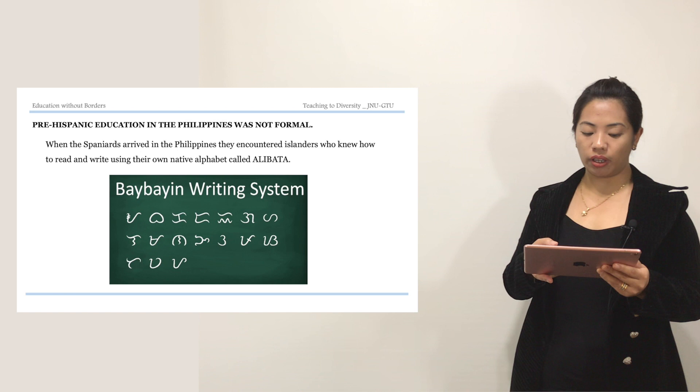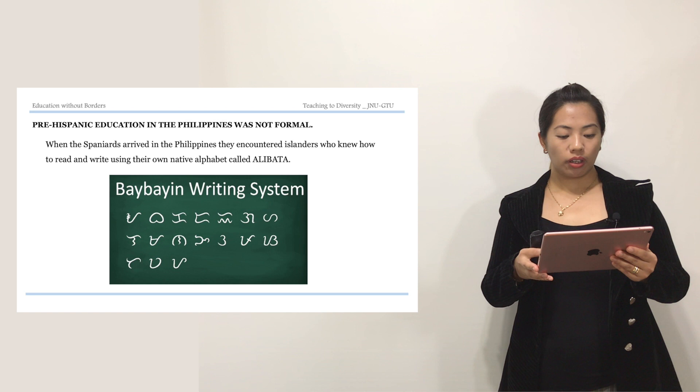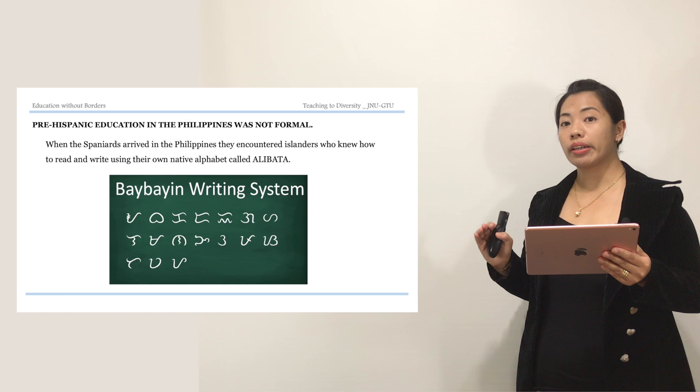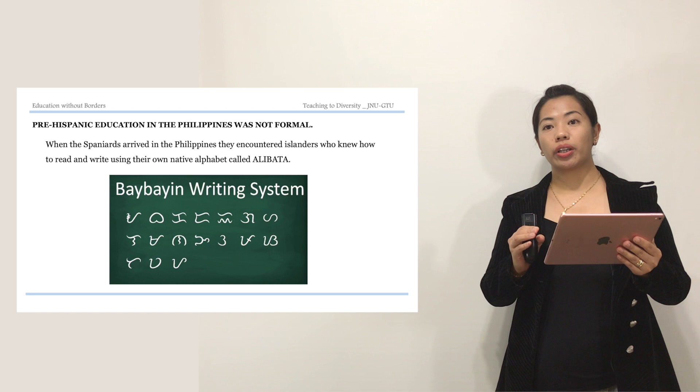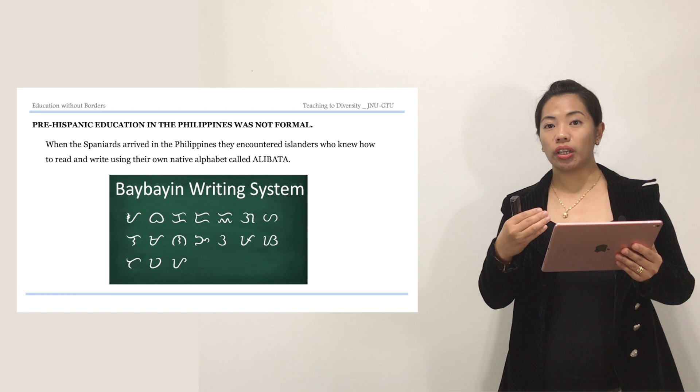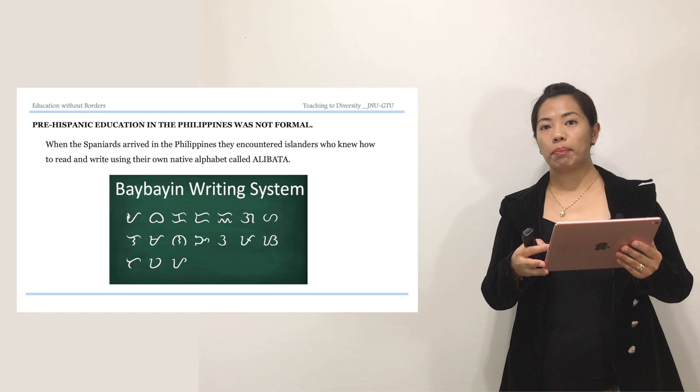This is our Baybayin writing system. When the Spaniards arrived in the Philippines, they actually encountered highlanders who knew how to read and write using our Alibata. This was how our alphabet looked like in the past. Just like other countries, one way they passed on tradition was by means of oral tradition, and also through writing using the Baybayin writing system.